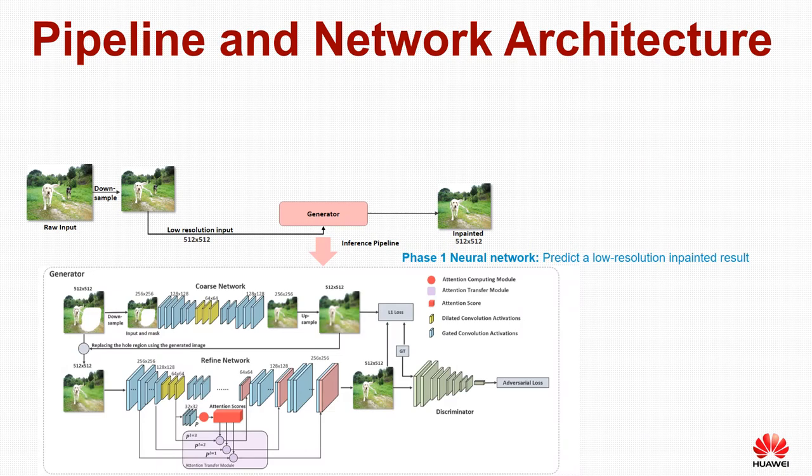In phase 1, given a raw image of any size, we simply downsample it to a low-resolution image of size 512 by 512. We then feed the low-resolution image and mask to the generator, which is a coarse-to-fine neural network that performs image inpainting in an end-to-end manner.